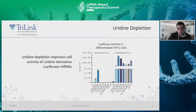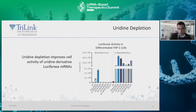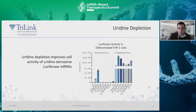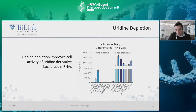One final approach for optimization — not necessarily related to modified bases — is uridine depletion. Given the evidence that innate immune activity may be linked to uridine content, another way to limit an immune response is to codon-optimize your sequence to deplete uridine content. The experiment shown here compares protein activity between a standard luciferase sequence and a uridine-depleted luciferase sequence, also comparing modified nucleotides in each case. In each case, uridine depletion shows higher levels of luciferase activity, and when paired with a base modification — specifically modified uridine — expression increases even more. The takeaway is that when performed in tandem with modified base usage, uridine depletion significantly improves protein functionality.